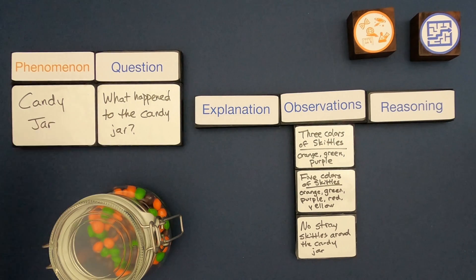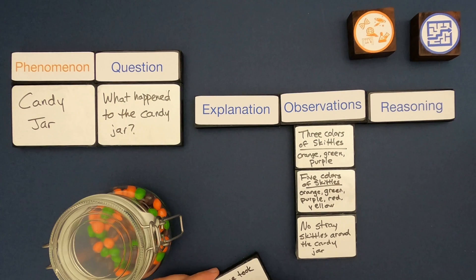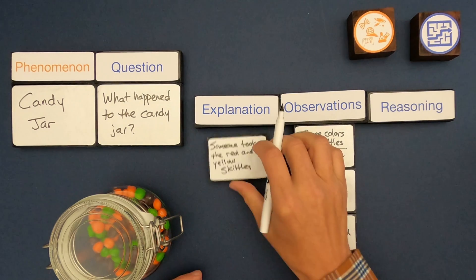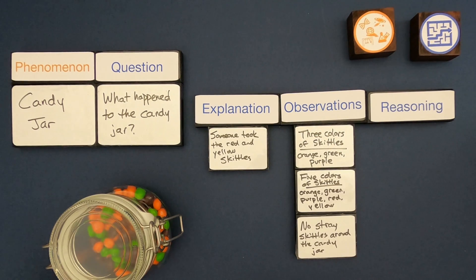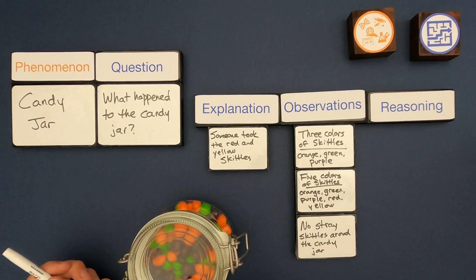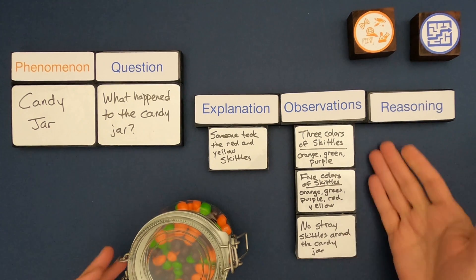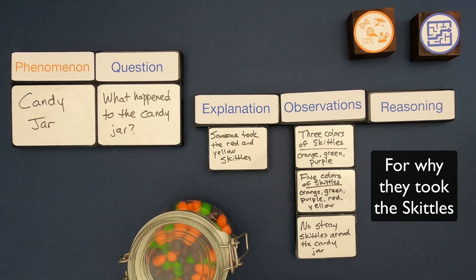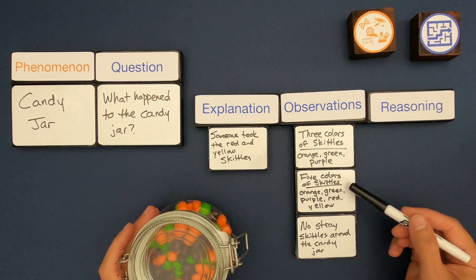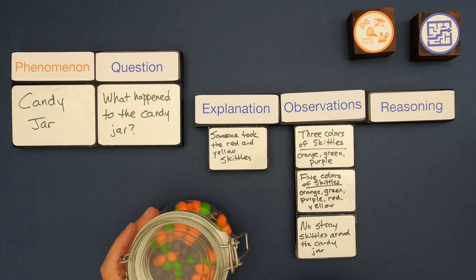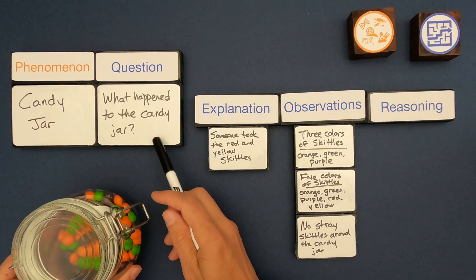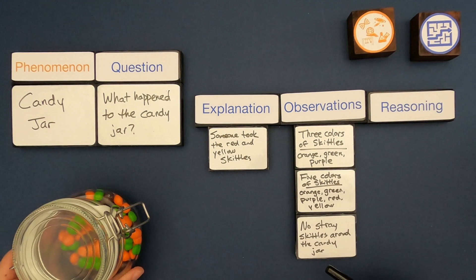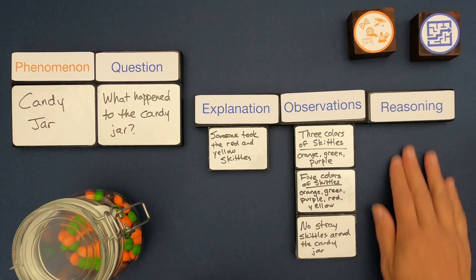Now that I've made some observations, I'm ready to come up with an explanation — simply an answer to the question. My explanation is that someone took the red and the yellow Skittles out of the candy jar. I don't have good observations about whether they liked or didn't like that color, but I do have good observations since the red and yellow were found inside the bag but not in the candy jar. Now we get to the hardest part: you have to come up with reasoning.